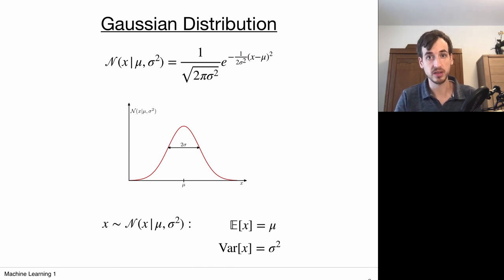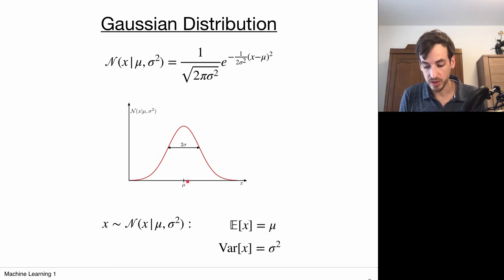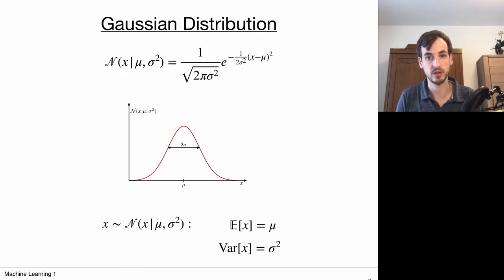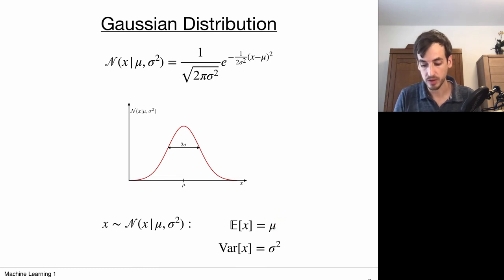To summarize: the Gaussian distribution is defined by an exponential that computes the square distance of x to mu, scaled by sigma. Mu determines the location of the maximum, and sigma makes it wider or narrower. There is a normalization factor ensuring the distribution integrates to 1. We showed that if x is drawn from this distribution, the expected value of x is mu and the variance is sigma squared.